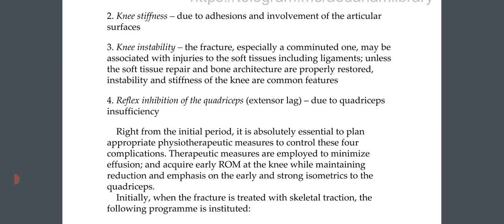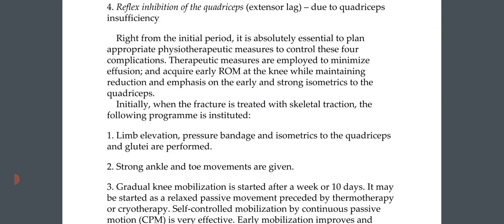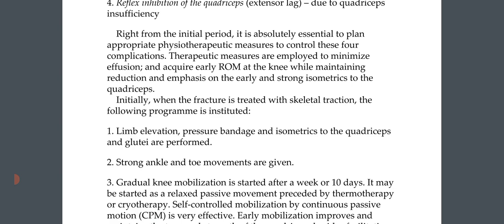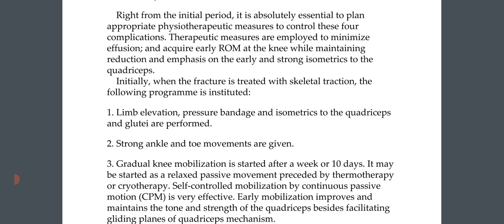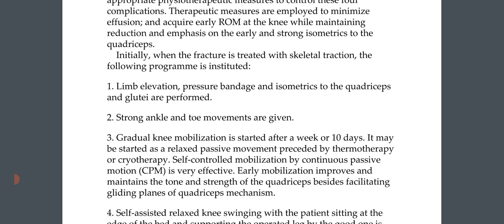Reflex inhibition of the quadriceps and extensor lag due to quadriceps insufficiency are common. From the initial period, it is essential to plan appropriate physiotherapeutic measures to control these complications. Therapeutic measures minimize effusion and acquire early range of motion at the knee while emphasizing early and strong isometrics to the quadriceps.